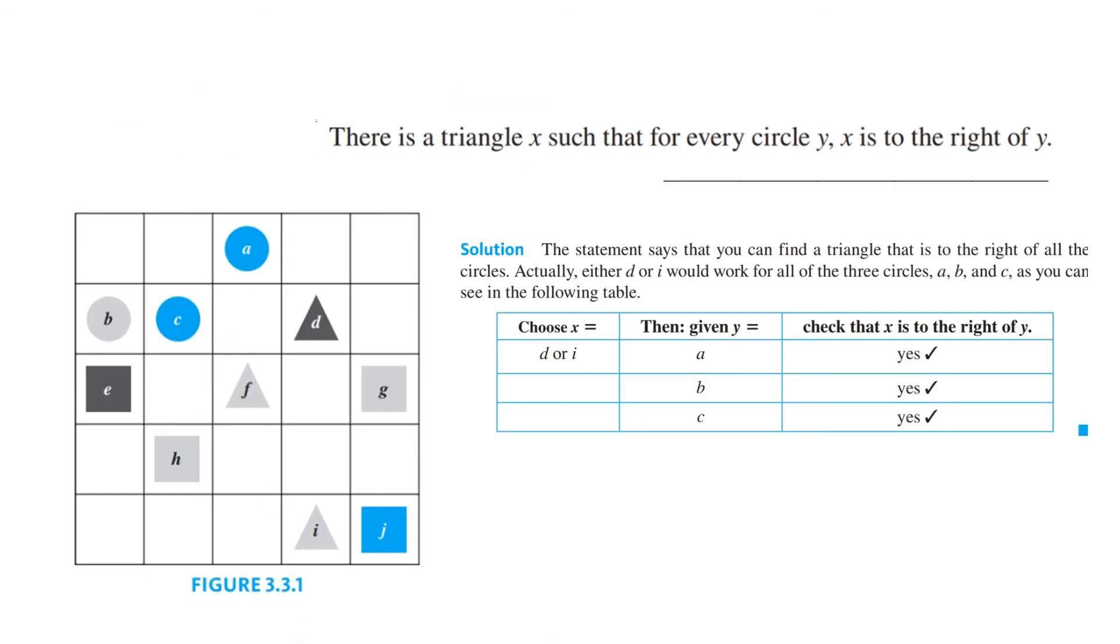Let's see how you did. There is a triangle x such that for every circle y, x is to the right of y. Well, they're giving you A, B, and C. Those are the circles, and D or I, either one, would work for all those. So you can see in the following table that that's true completely in this finite universe.